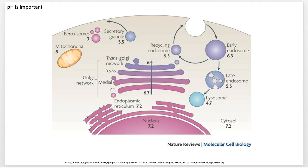pH is super important, especially in biological systems. I have a picture from a Nature Reviews article talking about pH changes just within the cell. You can see the nucleus is relatively neutral, but as we enter the endomembrane network and different vesicles, the pH changes. Typically it gets more acidic the farther away you get from the nucleus.